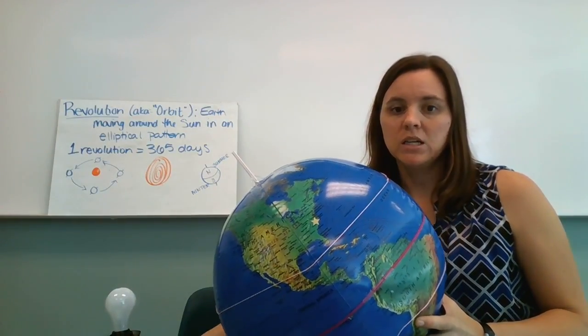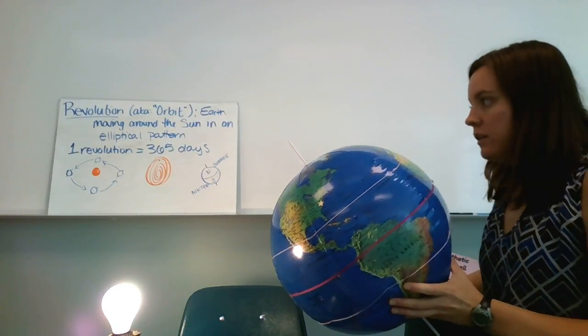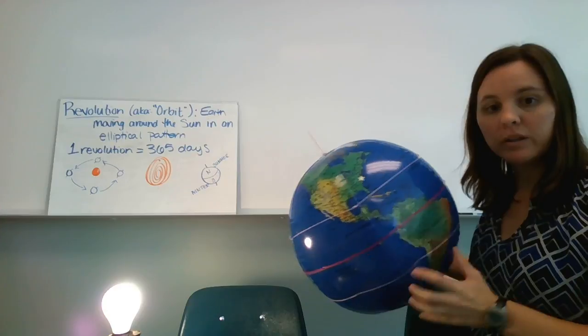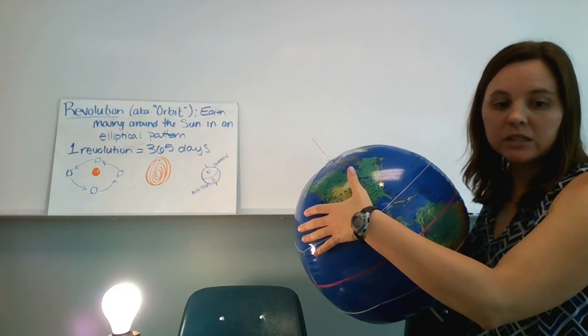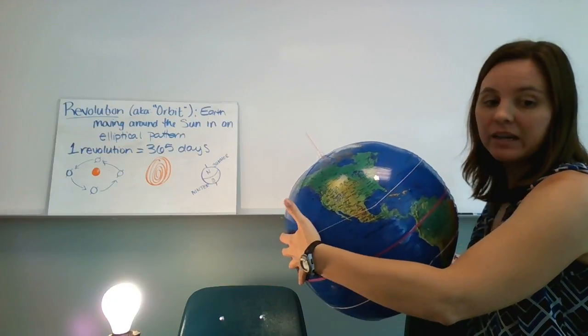So the other reason that we have seasons is because the earth is revolving around the earth's sun barycenter. We'll talk about barycenters in a couple of days. So when the earth, when the hemisphere that you are in is tilted towards the sun, you're getting the most direct sunlight, and that's summer.